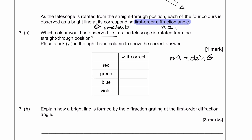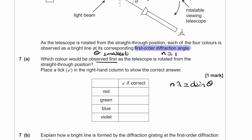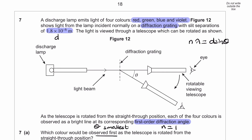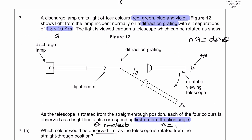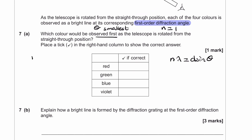Let's think about what's constant and what's changing in our equation. We're looking at the first-order diffraction angle, so n = 1, which is fixed. We're also told that d = 1.8 × 10⁻⁶, so d is also fixed. Therefore n and d are both constant.